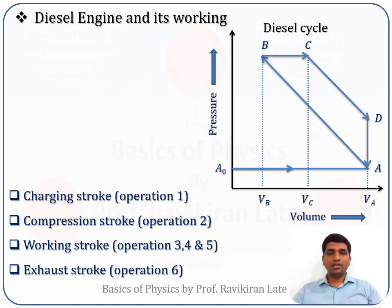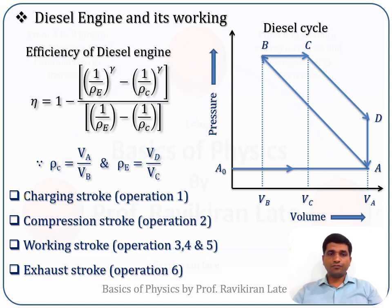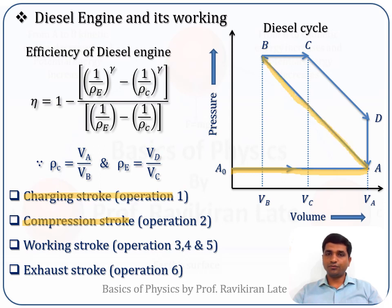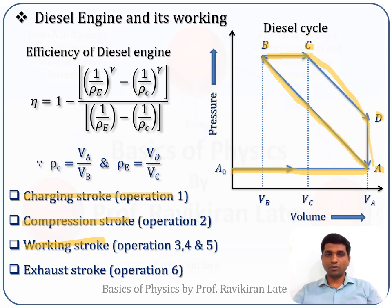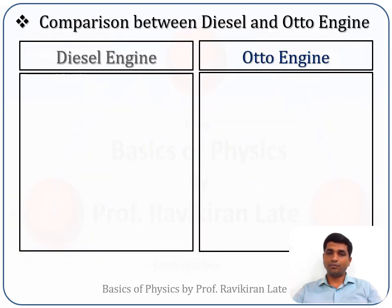In the diesel engine's first operation, the working substance — air — is taken inside the chamber. In the second phase, this is the compression stroke where the fuel is compressed. The third operation is the working stroke covering curves B to C, C to D, and D to A. In the final step, unused gases are ejected and the cycle completes.